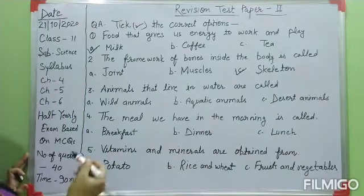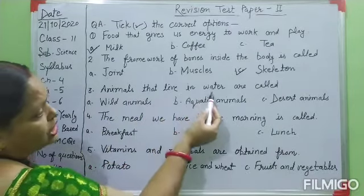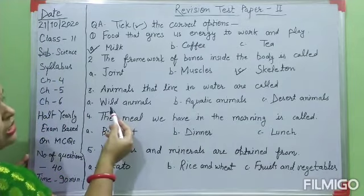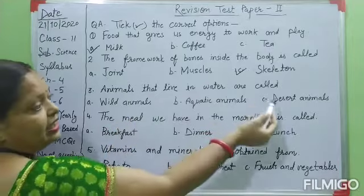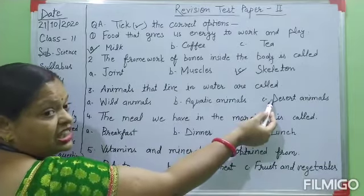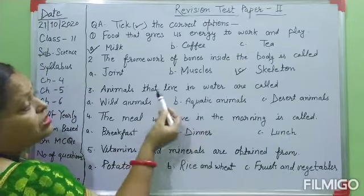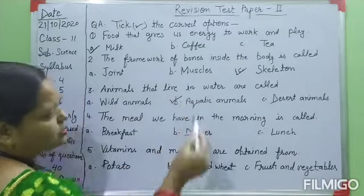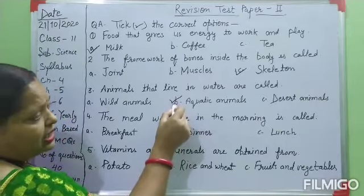Third question: animals that live in water are called. Let me explain: wild animals live in the jungle; desert animals live in a desert area — a sandy place with too much sand, like the camel. Aquatic animals are the animals that live in water. That's why your correct option is B. You have to click option B — aquatic animals.